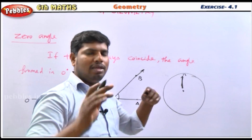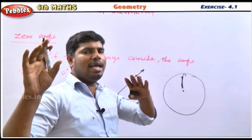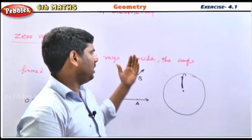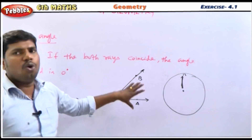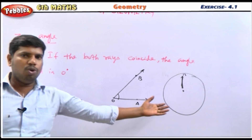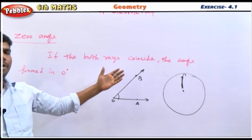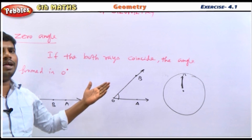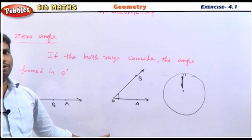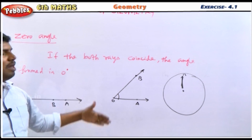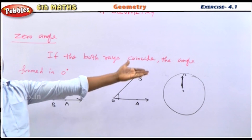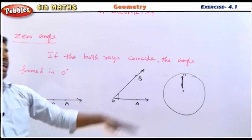If you see the measure at 12 o'clock position, the angle is 0 degrees. Both rays coincide. If the angle is 0 degrees, then no rotation is made by the rays — that is the zero angle.